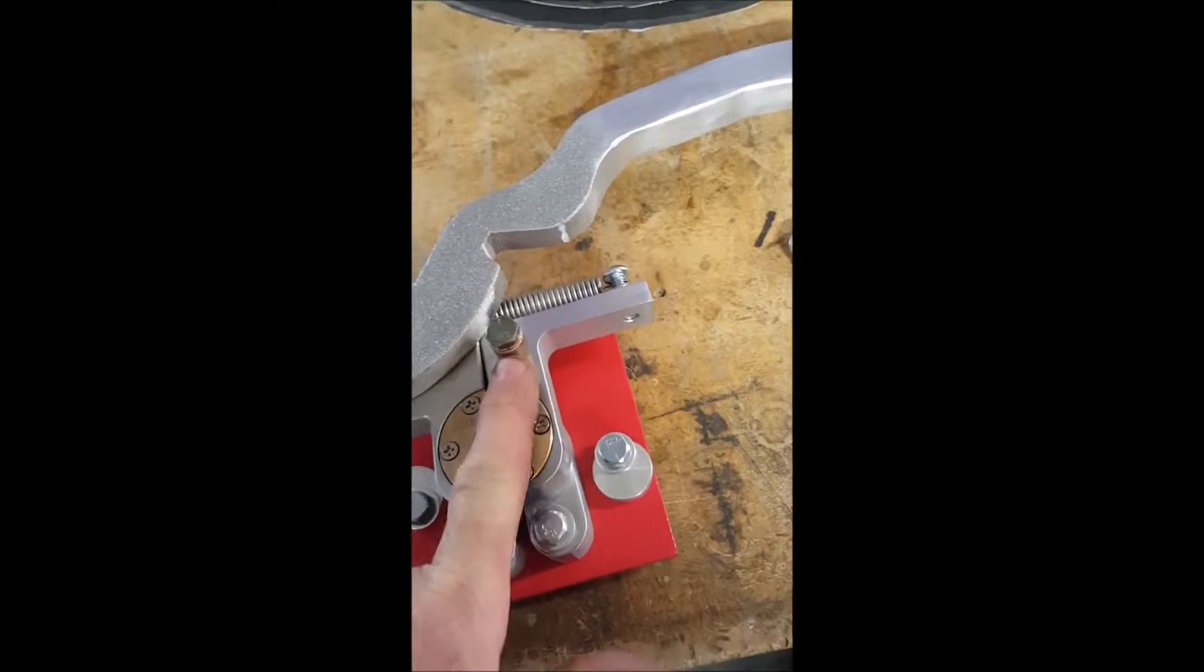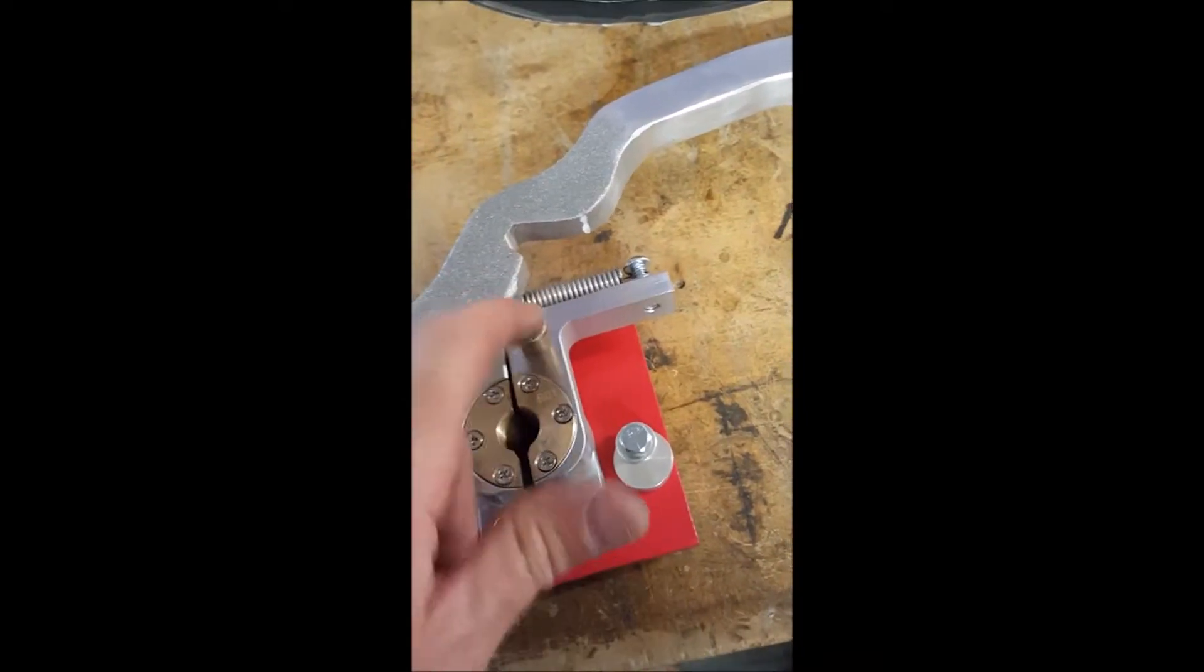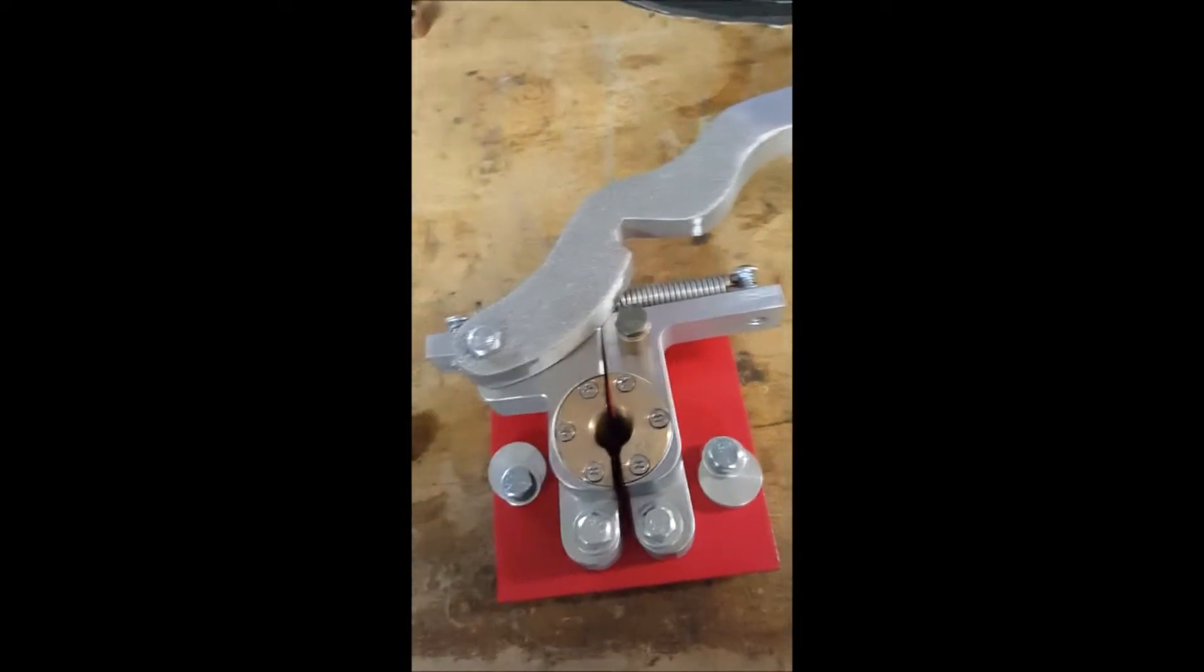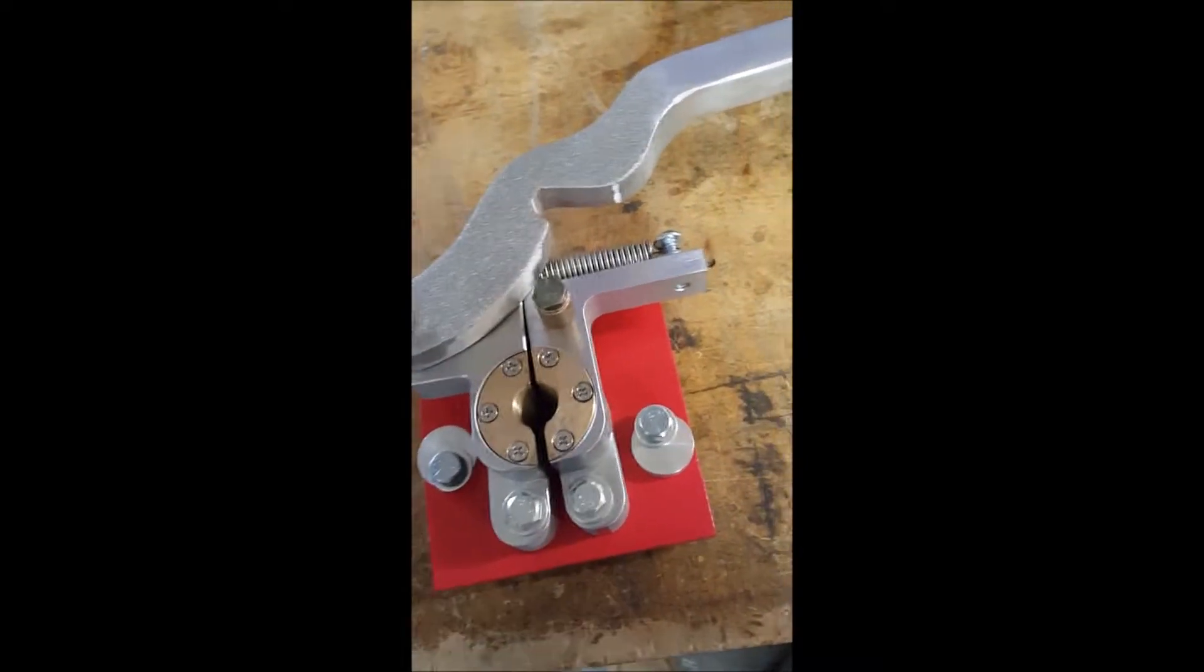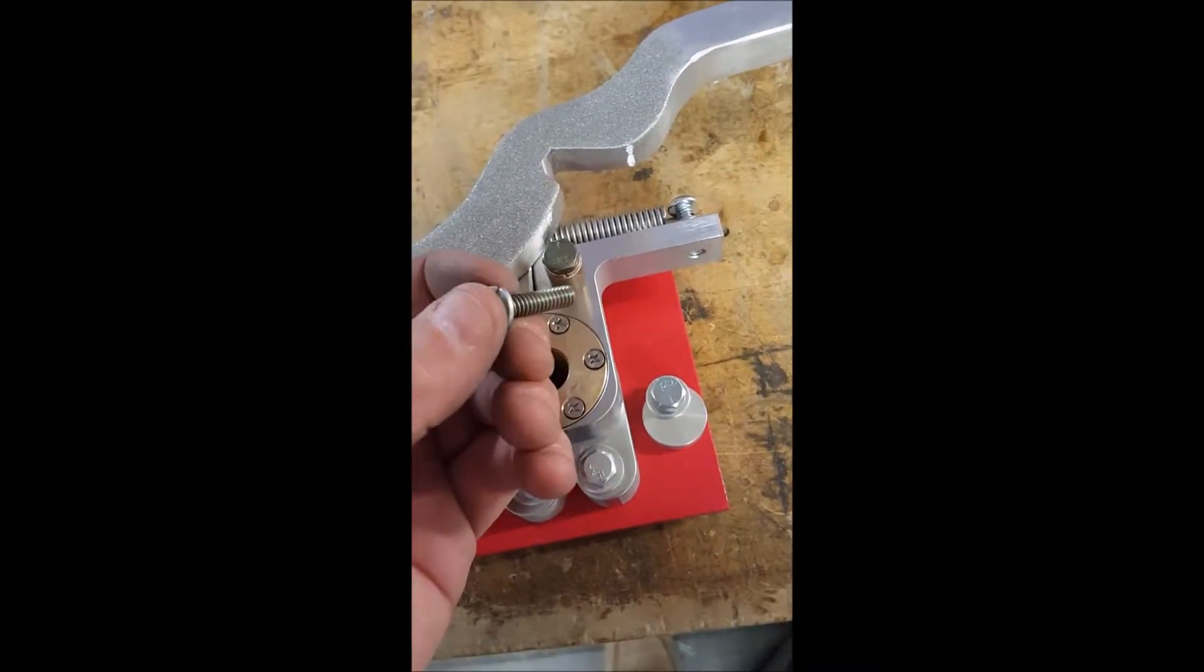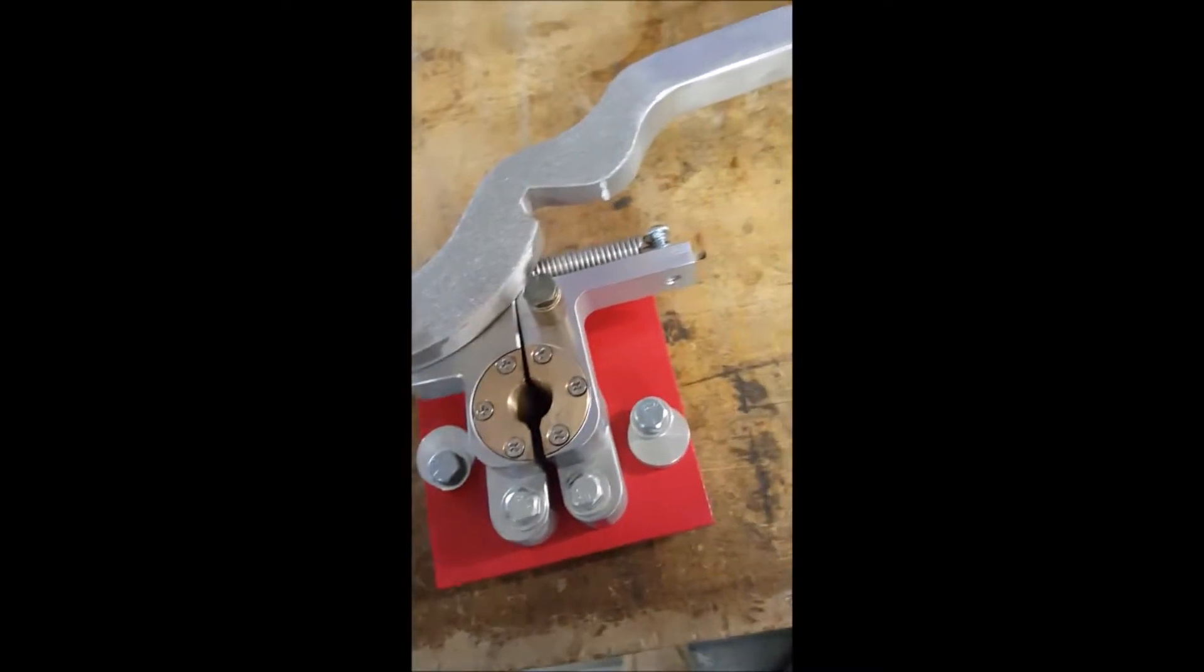Then you've got your pivot, which is kind of like the pivot lock for the thing, which we just used a bronze bushing for that, and we hold it on with a one-inch bolt and a lock washer.